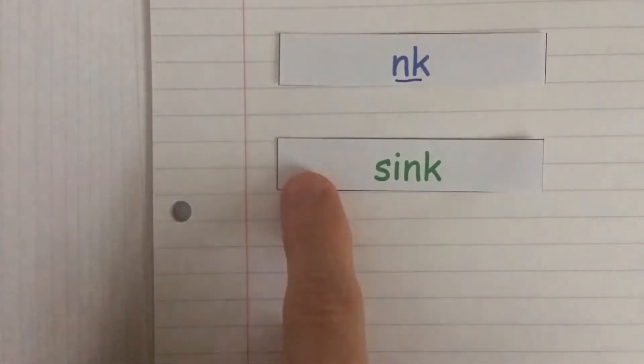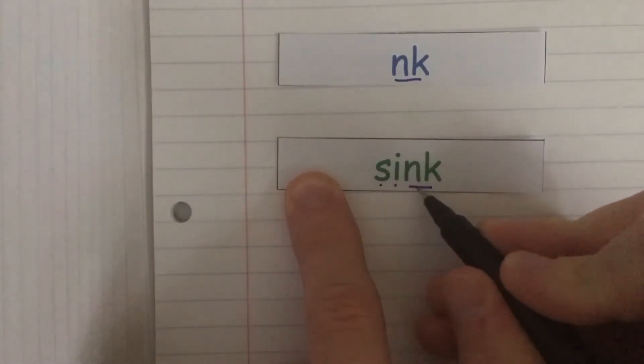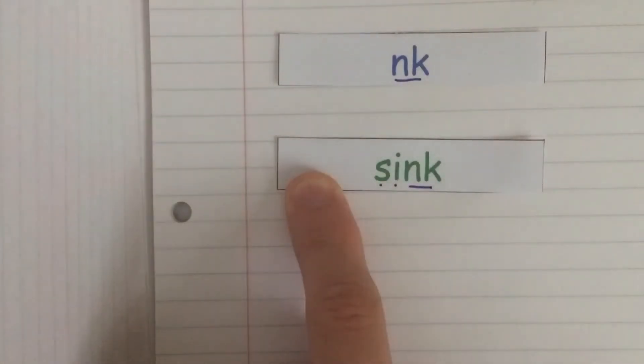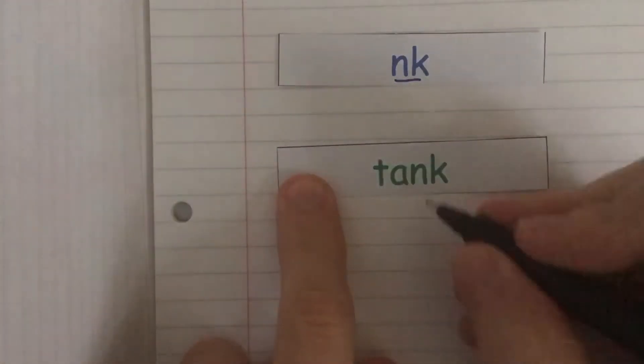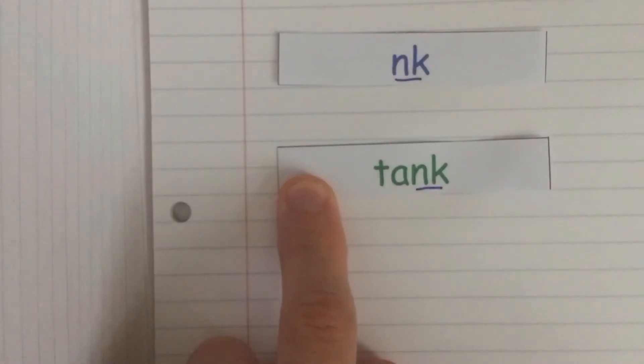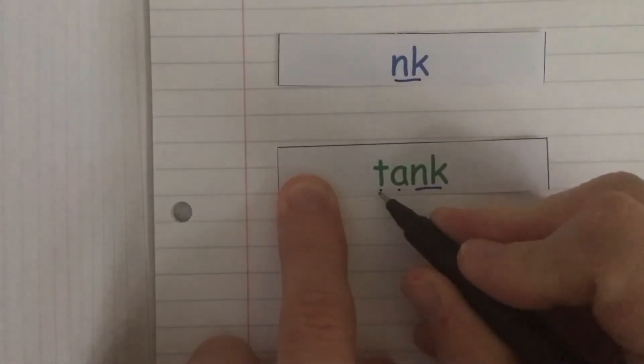Special friends nk. Fred talk: s-i-nk. Sink. Special friends nk. Fred talk: t-a-nk. Tank.